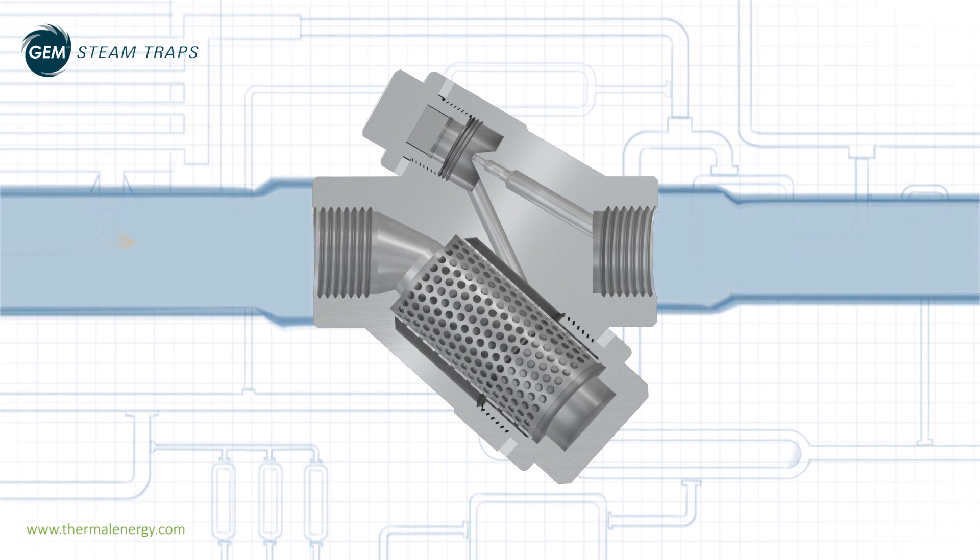Within a steam system, impurities such as scale, corrosion, welding metals, and other solids can enter the pipeline. As steam and condensate flow through the system, this debris can impact the operation of a steam trap.